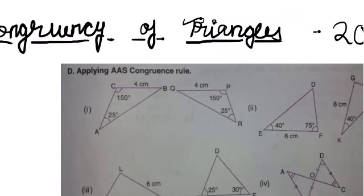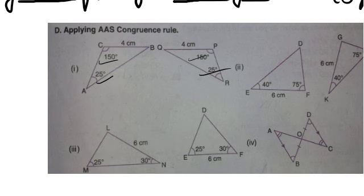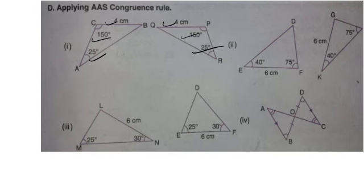To prove congruency, the two angles should be equal and the side should be equal. You can see one angle is 25 degrees and the other is also 25 degrees — so we have a pair. Then 150 degrees and 150 degrees — another equal pair. And four centimeter and four centimeter sides are also of equal measures.